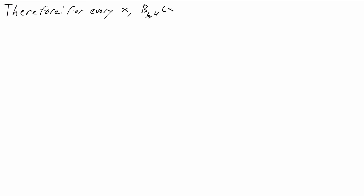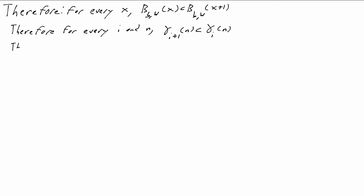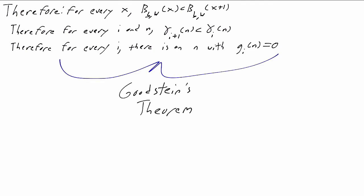And that was the last step we need to prove that the ordinals gamma_i(n) are decreasing: gamma_{i+1}(n) is always less than gamma_i(n). That completes the proof of Goodstein's theorem. Even though the Goodstein sequence g_i(n) seems to get big, the associated sequence of ordinals gamma_i(n) is strictly decreasing. Since the ordinals are well-founded, they eventually hit 0 after finitely many steps. And when they do, the Goodstein sequence must also have reached 0.